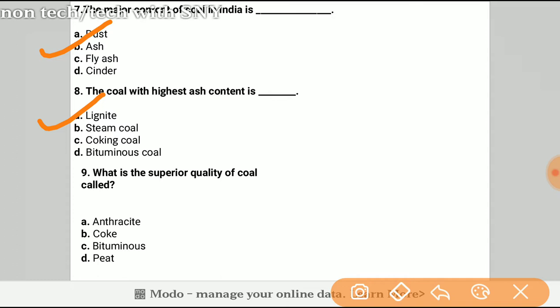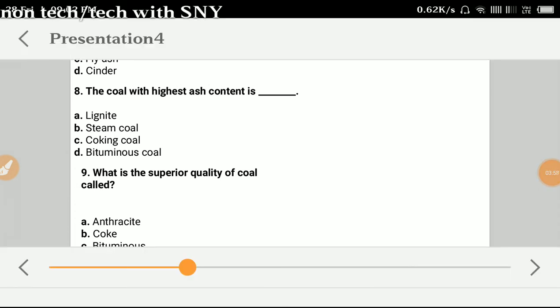What is the superior quality of coal called? The superior quality of coal is called bituminous. The answer to the ninth question is bituminous.